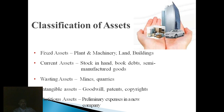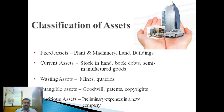Fixed assets include plant, machinery, land, and building. Current assets include stock in hand, book debts, and semi-manufactured goods. Wasting assets refer to mines and quarries. Intangible assets are those you cannot touch or find physical construction of — examples include goodwill, patent, and copyright. Fictitious assets include preliminary expenses incurred when setting up a new company.